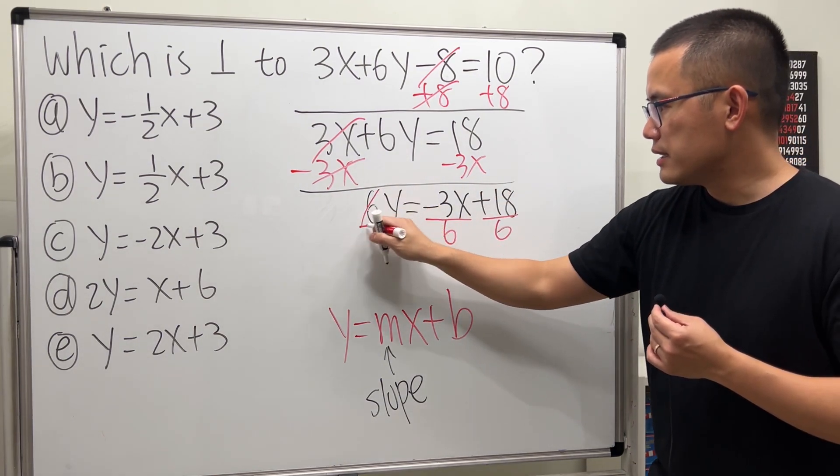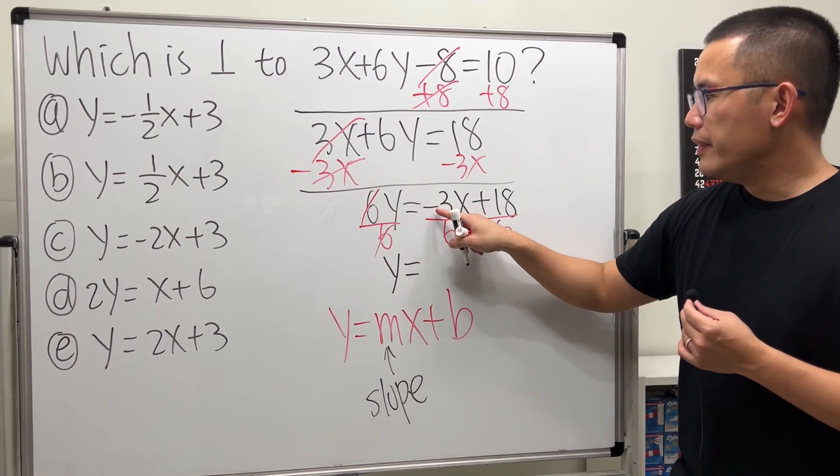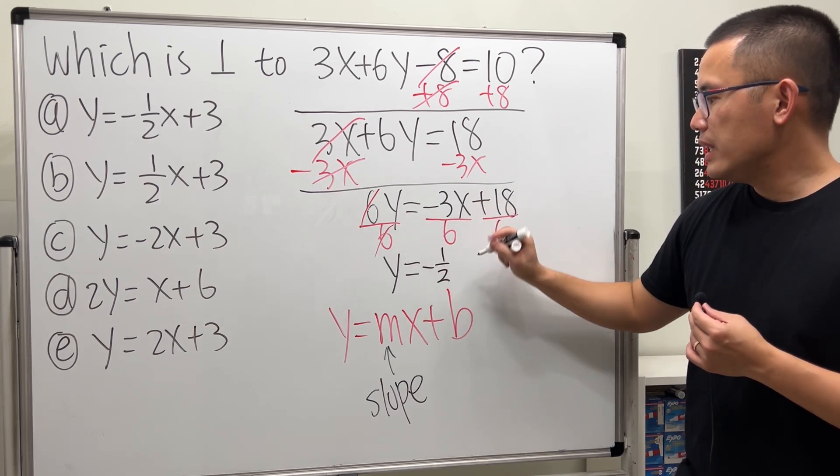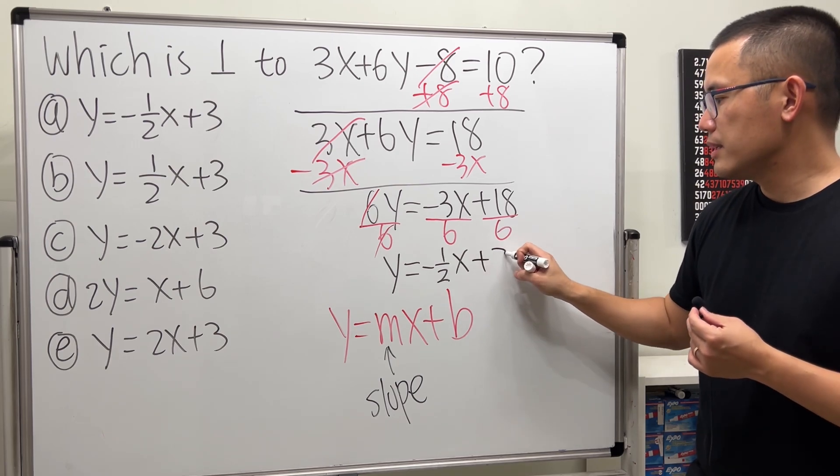So, you can see, this and that cancel, we get y equals negative 3 over 6 is negative 1 over 2, and then we have the x, and then 18 divided by 6 is plus 3.